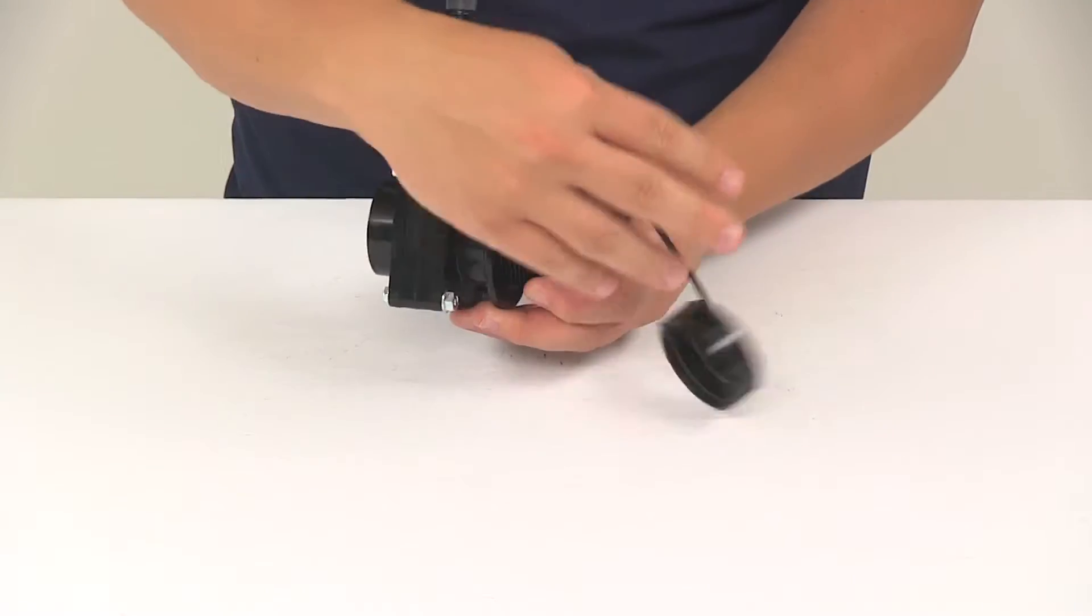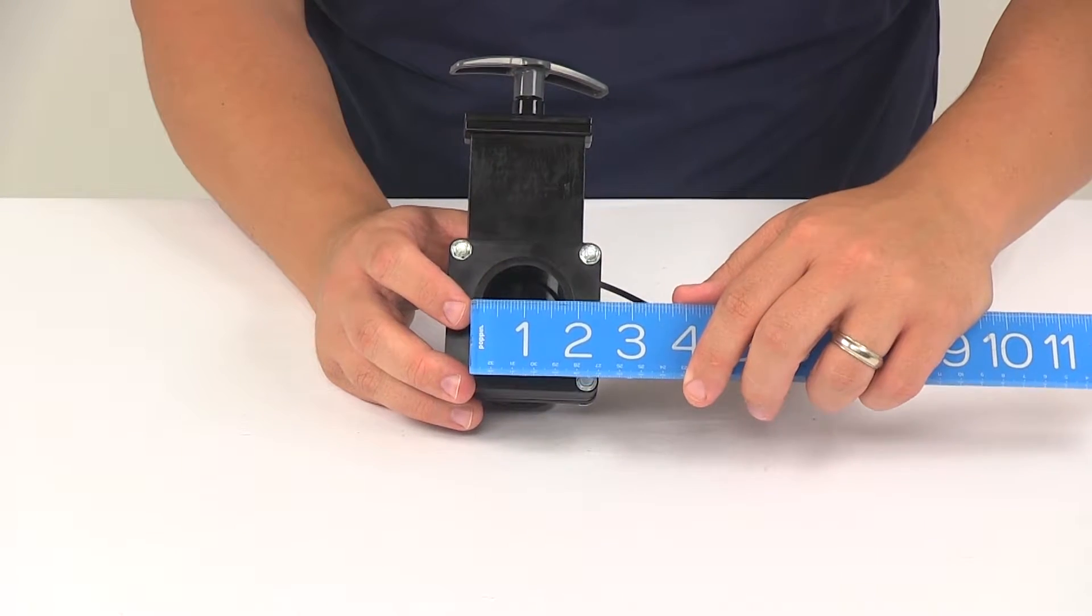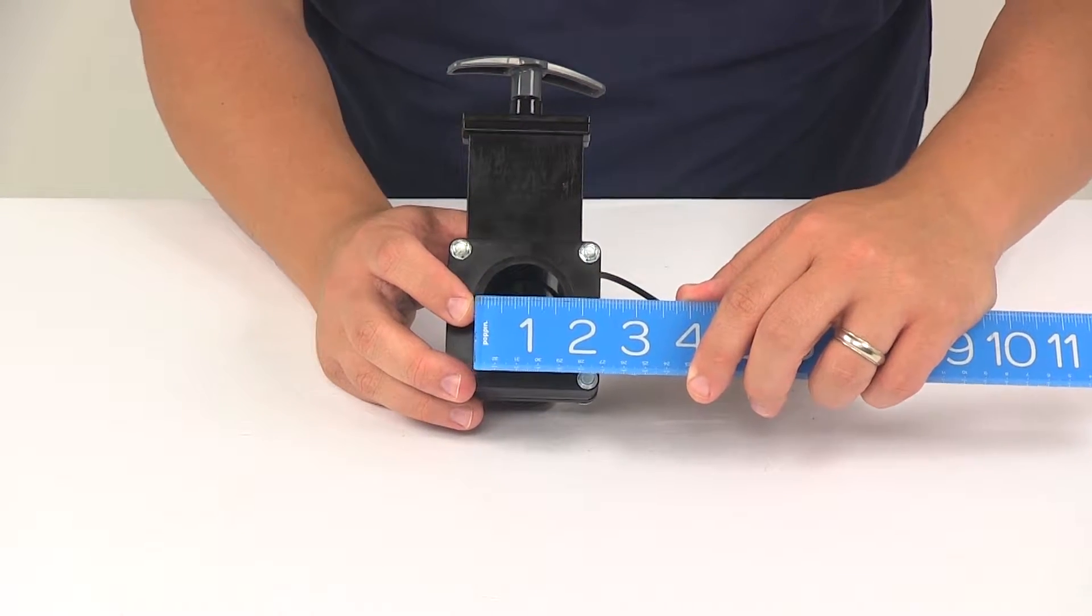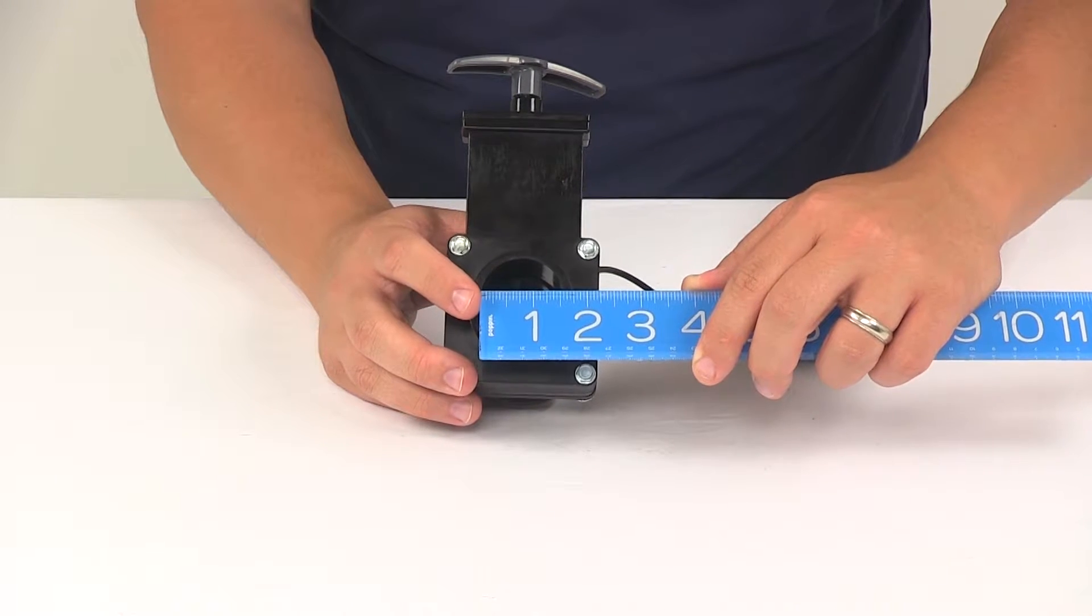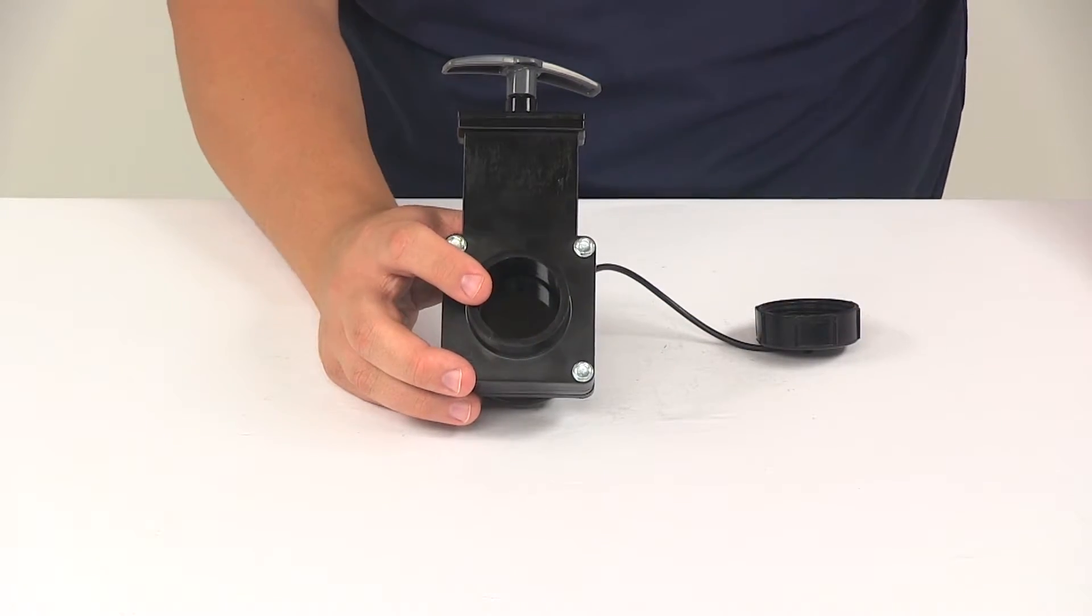On the other end, this is going to give us an outer diameter measurement of about one and seven eighths of an inch. Inner diameter is going to measure about one and nine sixteenths of an inch. So it's designed for an inch and a half pipe.